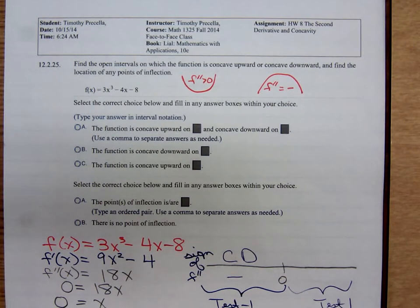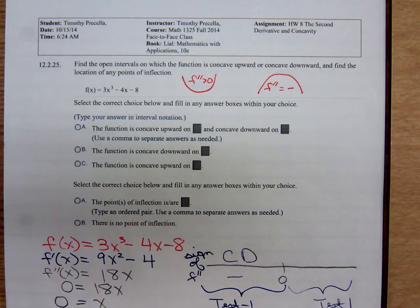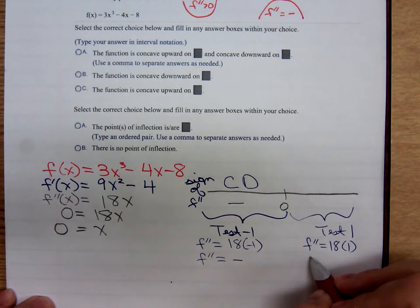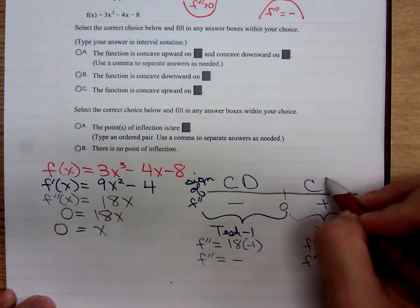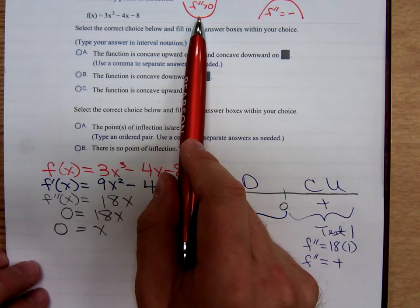To the right, when f double prime, that's 18 times a positive 1, 18 times a positive 1. That means f double prime is positive, so concave upward. f double prime is positive, concave upward.